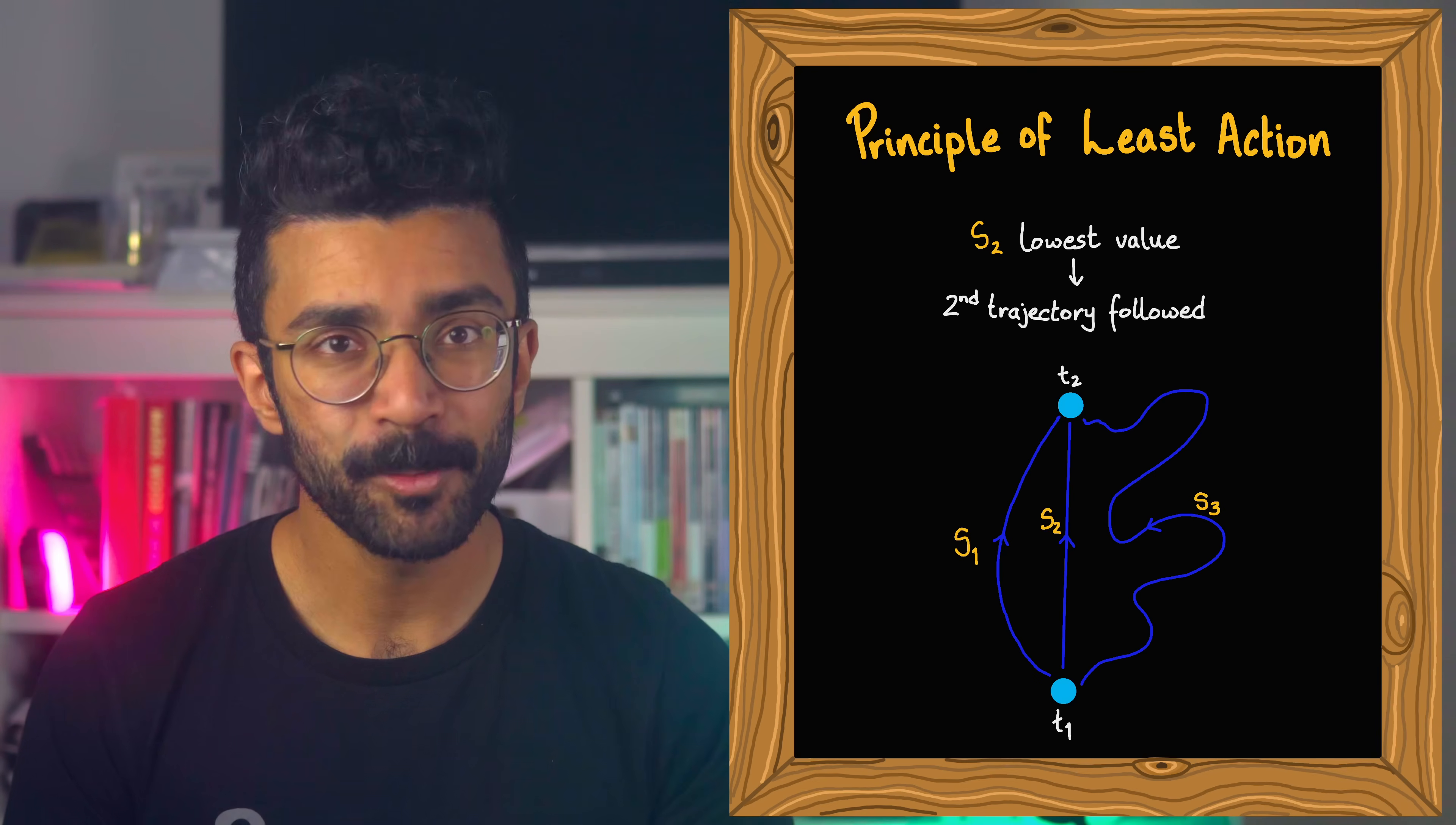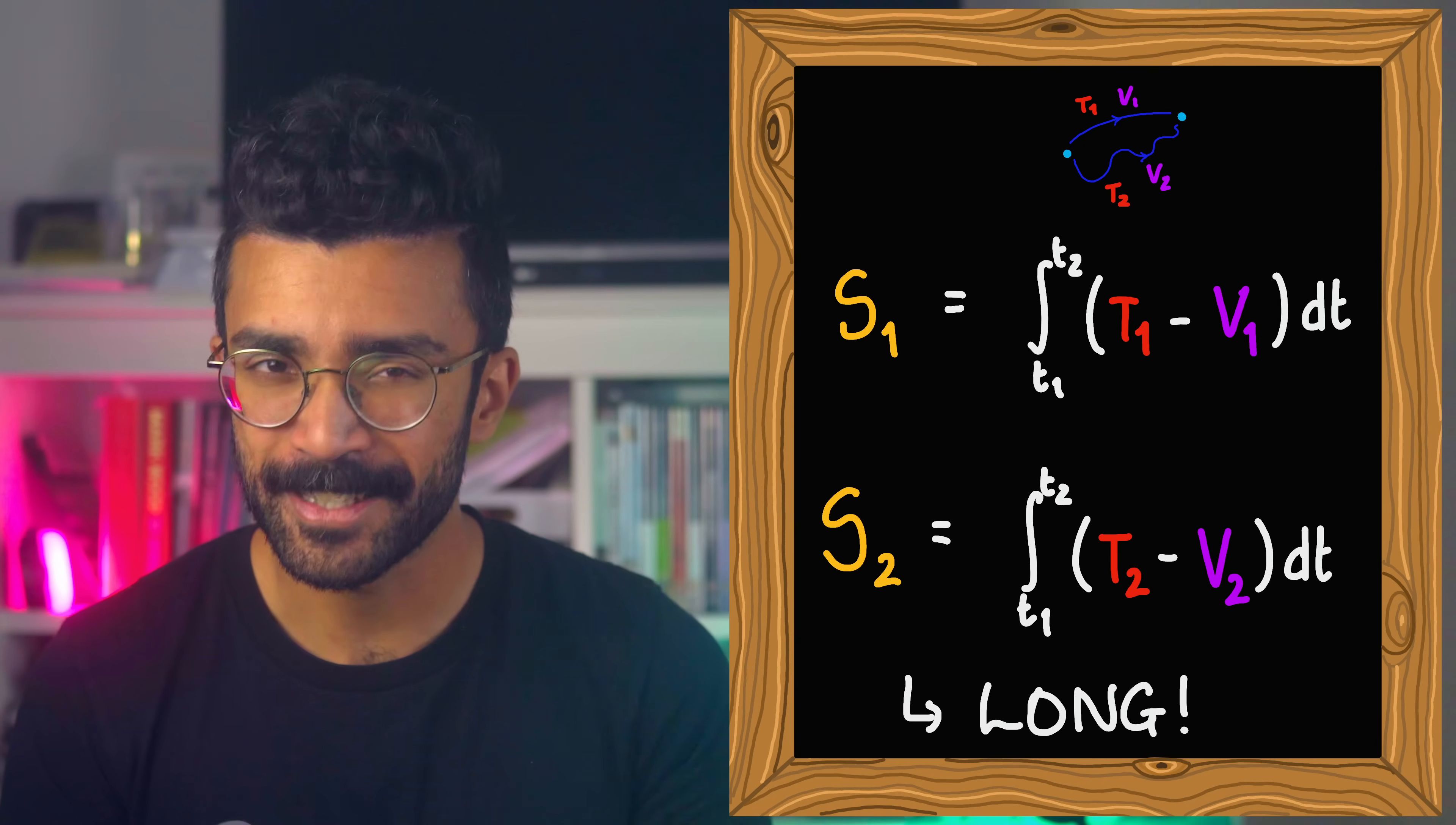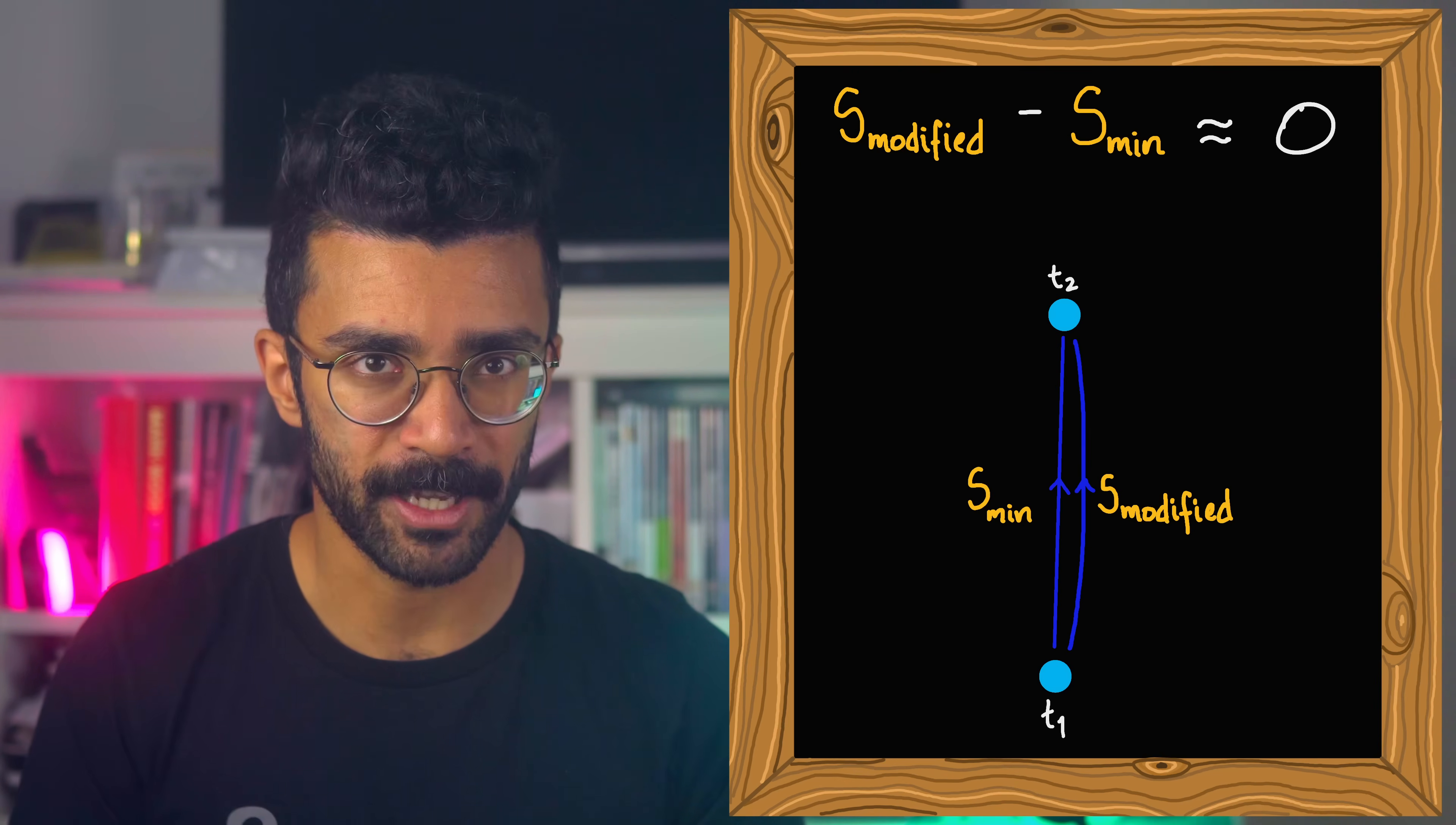Now here's the thing, how do we go about actually doing this, like mathematically? It's not like we want to try plugging in different values of kinetic and potential energy to find the ones for which the value of s is minimum. We can instead use some smart maths that essentially says, if we knew the right trajectory, and we changed it a little bit, then the value of s would not noticeably change, because at this point is minimal, meaning changing the path just results in a slight change of value of s.